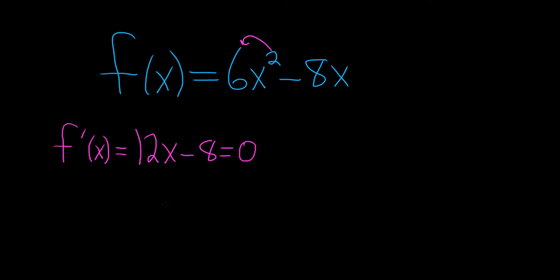So here we look at the derivative and notice that it's not undefined, so now we just solve for x. We'll add 8 to both sides. So we have 12x equals 8 and divide by 12.